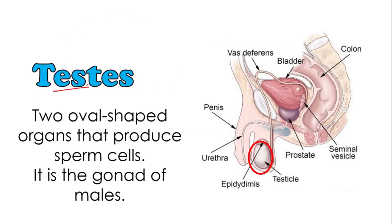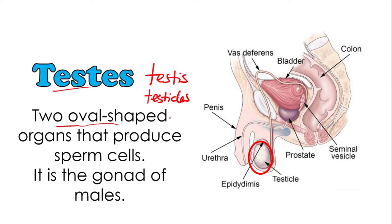The first organ is the testes — plural form; the singular form is testis, also called testicle. The testes are two oval-shaped organs that produce sperm cells and sex hormones such as testosterone. The testes are the gonad of males. Inside the scrotum, we can find the testes.